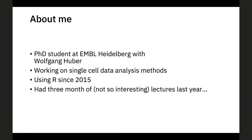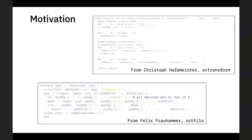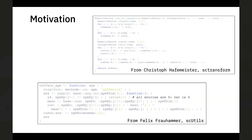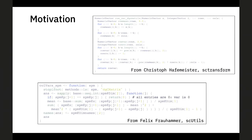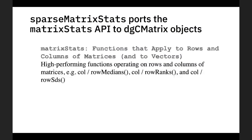What inspired me to this package was that I saw a lot of people, especially working in the single cell field, were writing very similar functions to calculate, for example, the variance of a sparse matrix. It's inefficient if everybody does it themselves. So I wanted to have one reference implementation which works well, is stable, is well tested, that everybody can simply import to their package and not reinvent the wheel. My goal was to take the popular matrixStats package and port the API to sparse DGC matrices.